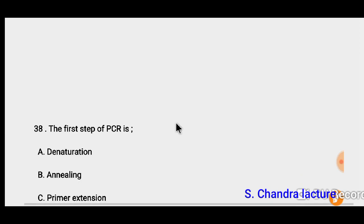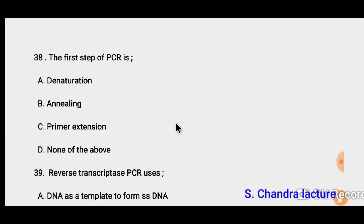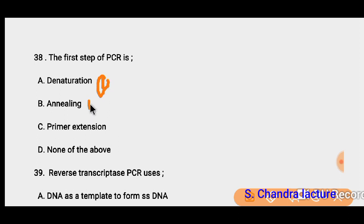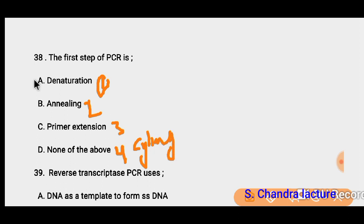Question 38: The first step of PCR is denaturation. PCR — polymerase chain reaction — has 4 steps: first is denaturation, then annealing, then extension (primer extension), then cycling. Out of these four steps, the first step is denaturation. So the correct option must be A.